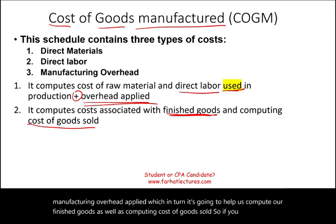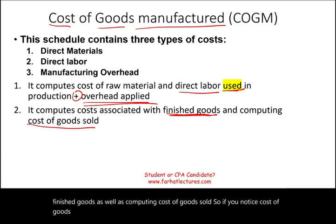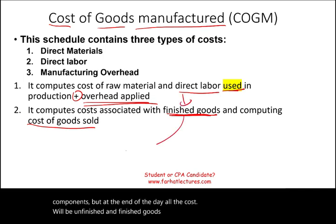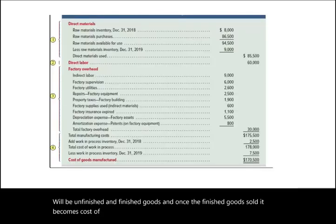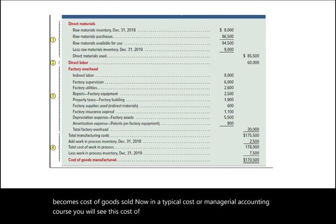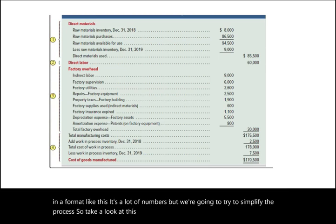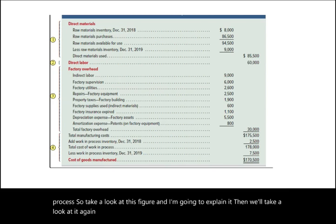Cost of goods manufactured has many various components, but at the end of the day all the cost will be in finished goods, and once the finished goods are sold it becomes cost of goods sold. In a typical cost or managerial accounting course you will see the schedule of cost of goods manufactured in a format like this. It has a lot of numbers but we're going to try to simplify the process.